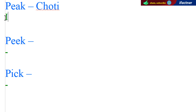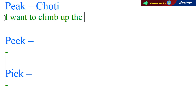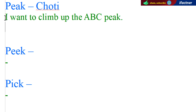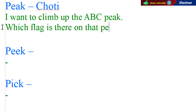Toh jaise hum keh sakte hain: 'I want to climb up the ABC peak' — main ABC peak par charhna chahta hoon, jo ABC choti hai us par charhna chahta hoon. Isi tarah hum keh sakte hain: 'Which flag is there on that peak?' — hum neeche khare hain aur hume choti par koi jhanda sa nazar aa raha hai, toh main poochhta hoon ke us choti par kaun sa jhanda laga hua hai?